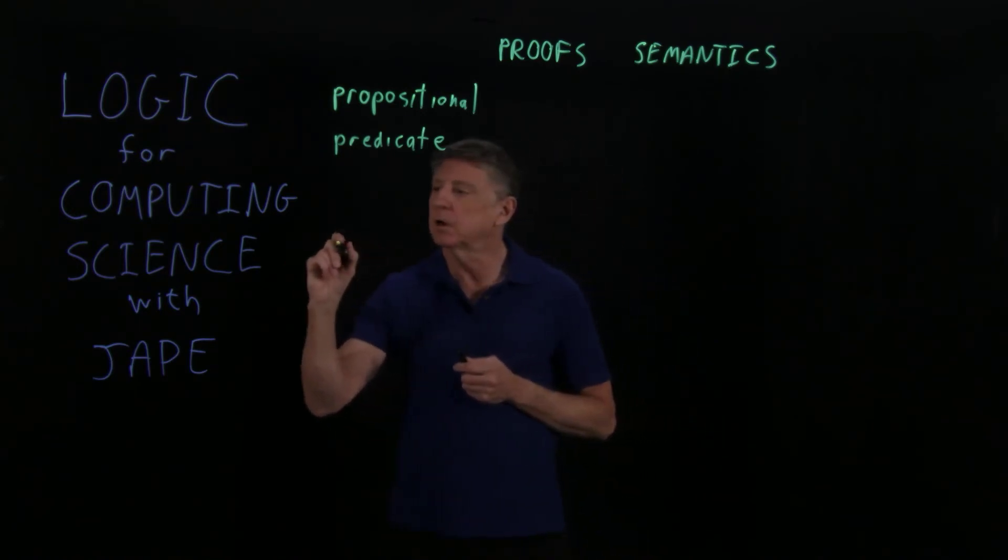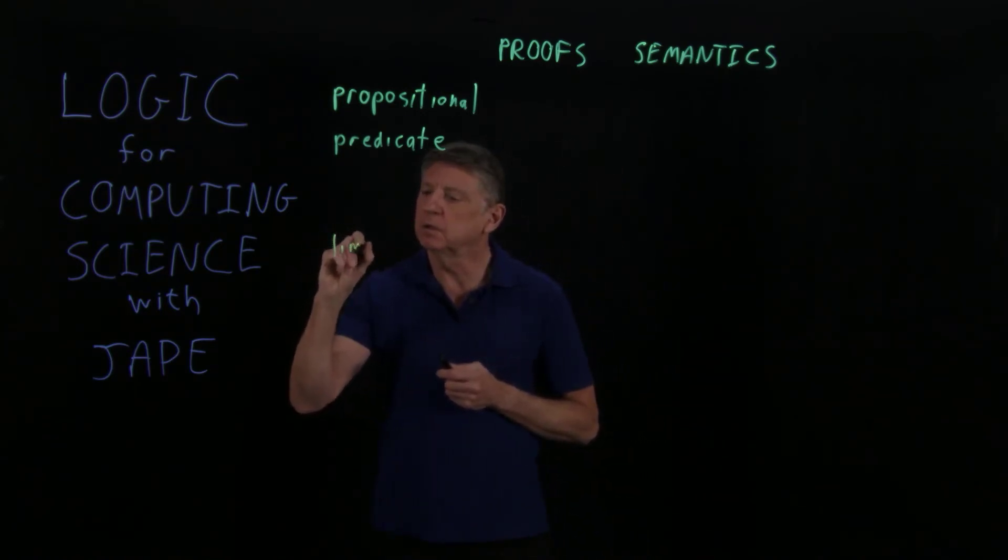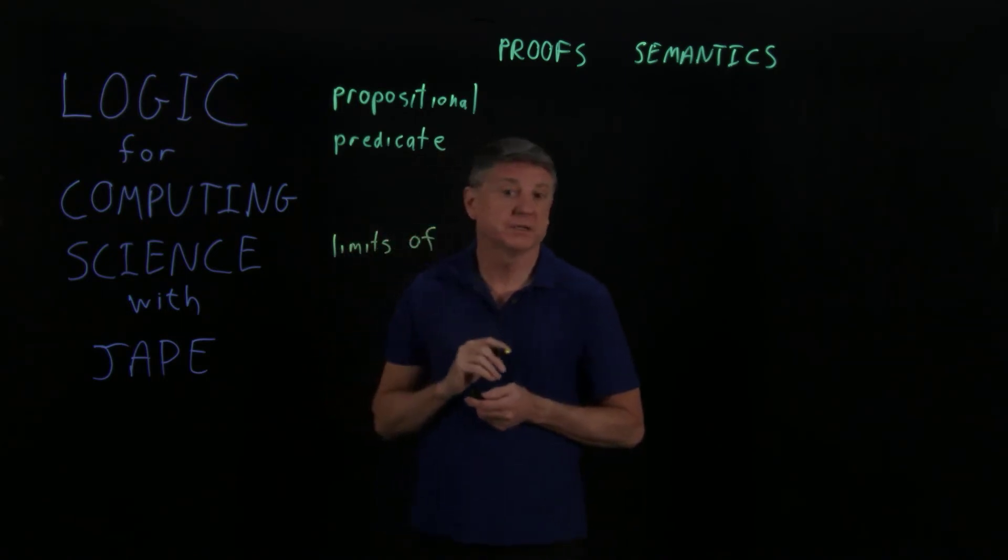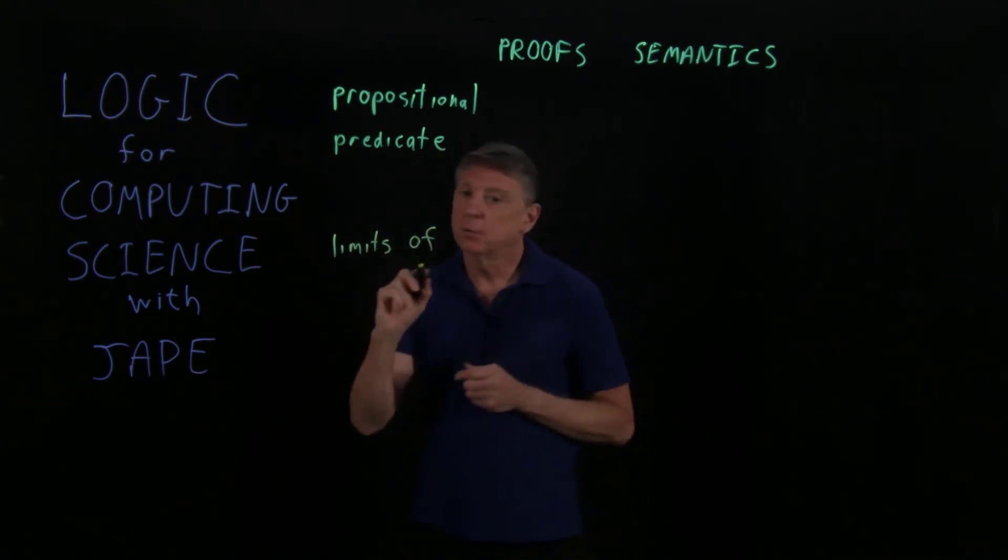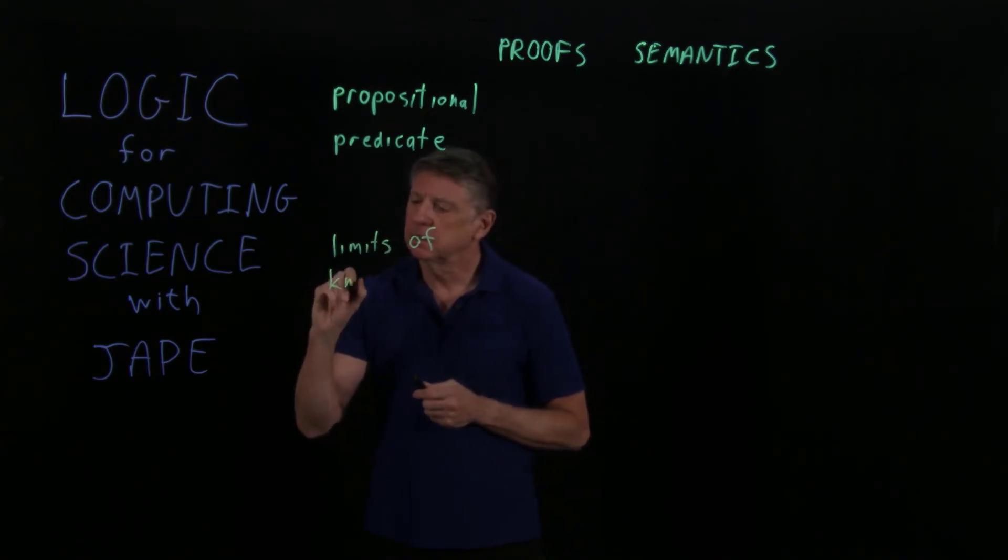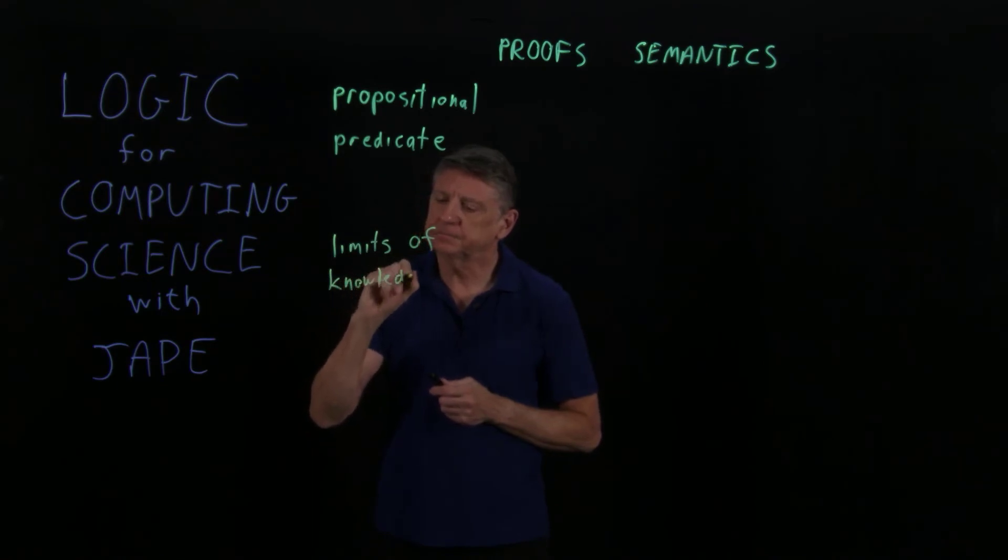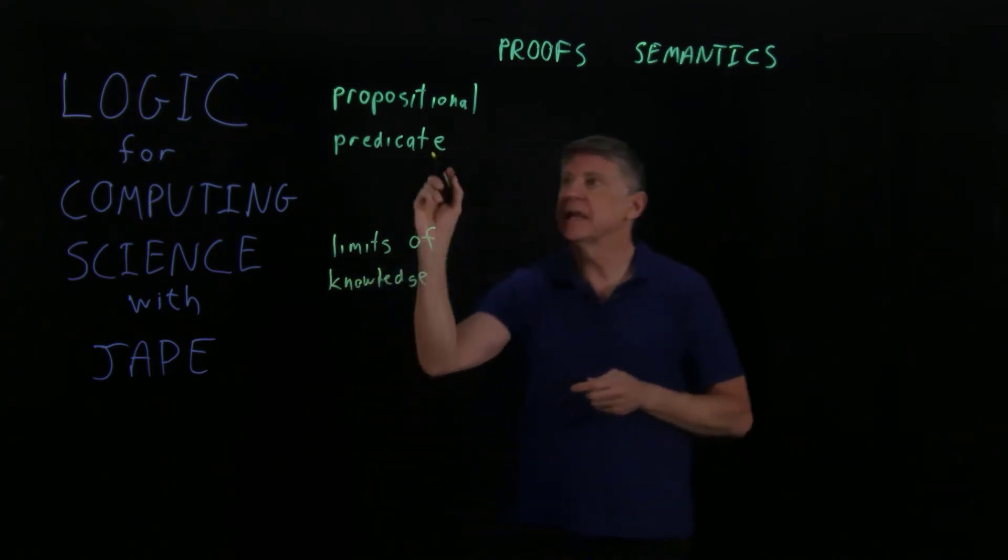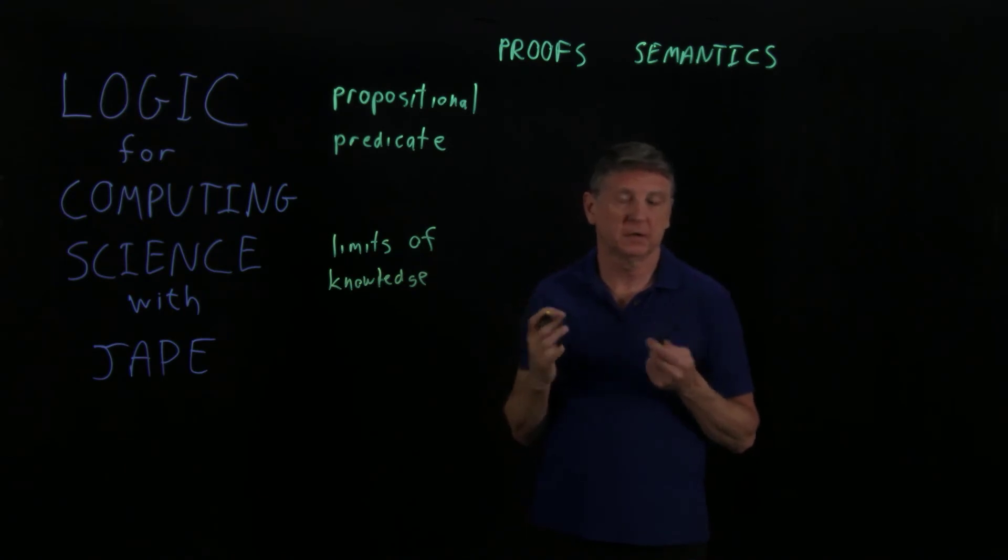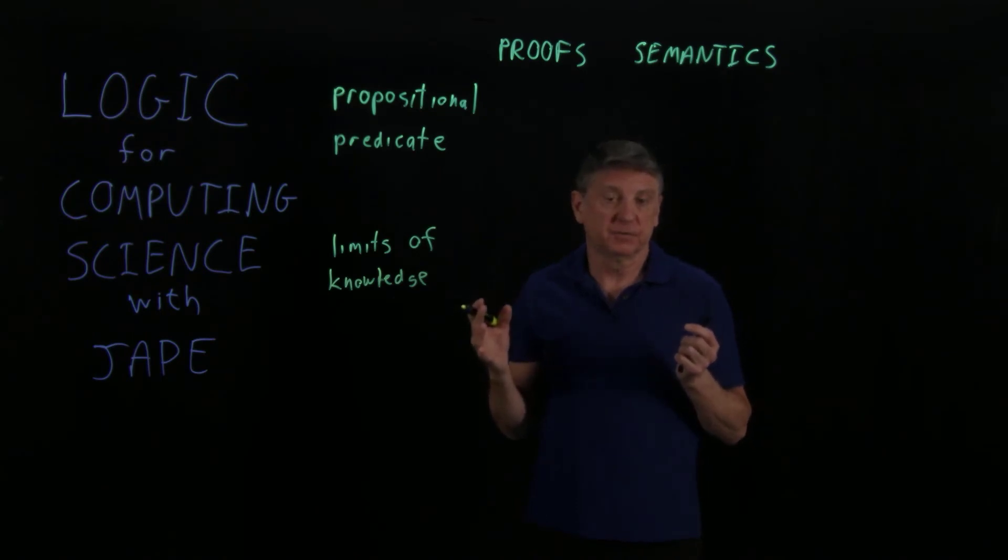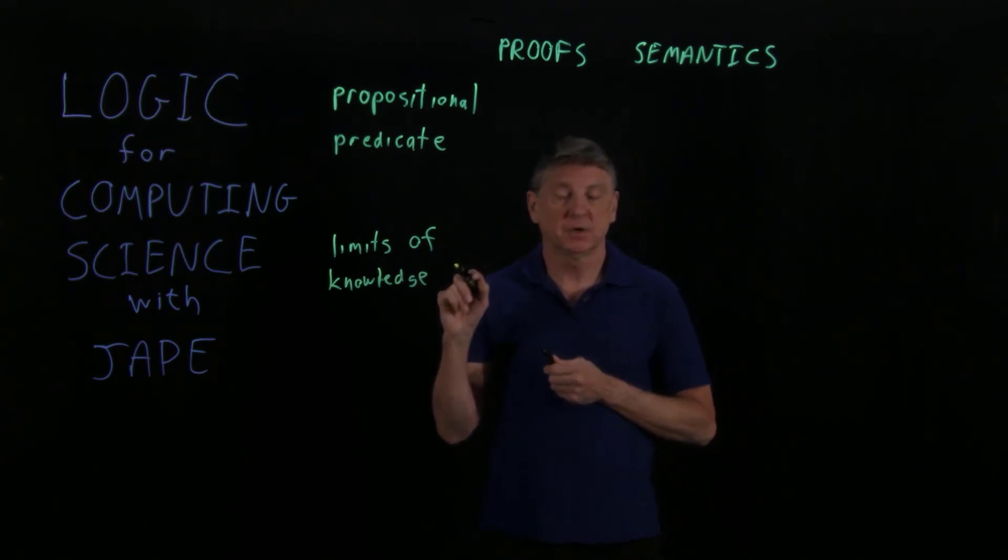So on the science part, what we'll do is we'll very briefly state, and we won't prove because these are quite advanced concepts, some of the limits of knowledge that arise even in something as elementary as what's called first order predicate logic. That is, ones where we're saying all of the universe of discourse, or some of the universe of discourse. Even with that, there are limits of knowledge.